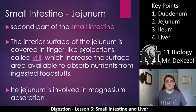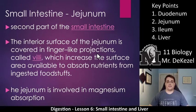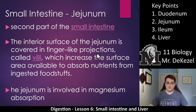The second part is the jejunum. The interior surface of the jejunum is covered in finger-like projections called villi, which increase the surface area available to absorb nutrients from ingested foodstuffs. Once you eat food and break it down into tiny pieces, your body works hard to absorb it, and the villi are what make that possible. The jejunum is the principal site of absorption — as much as possible gets absorbed here, including magnesium.